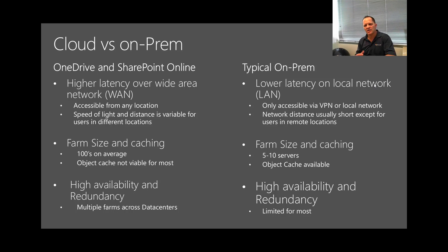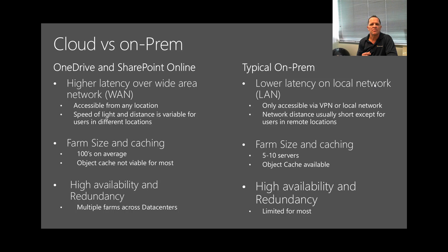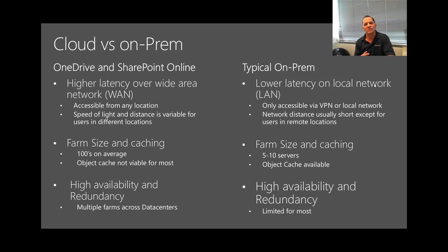To have high availability is significantly higher cost and complexity on-premises. Whereas in the cloud we have multiple farms located in different data centers. At any point in time you have high availability through the servers in the farm, and you have DR or redundancy for failover — should anything occur, we can fail over completely across two different data centers. That's something obviously very difficult to achieve in an on-premises space.